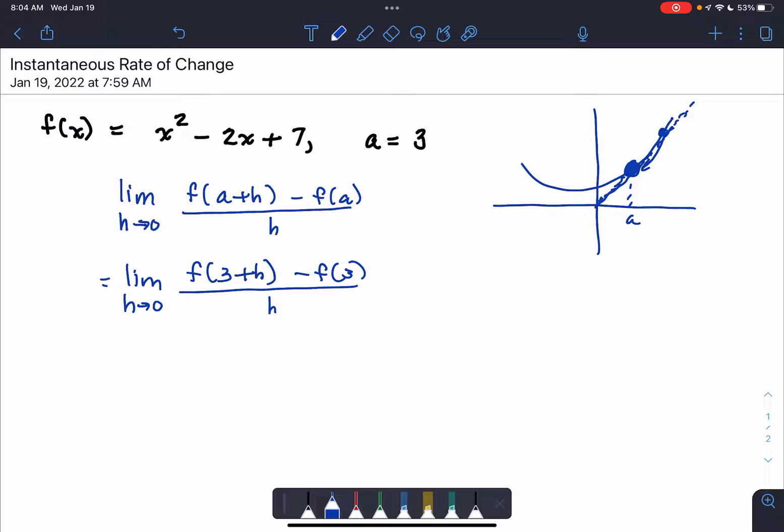We have to find f at 3 plus h, which means substitute 3 plus h into the function and simplify, then we have to find f of 3, then we subtract them. But before we do that let's just talk about notation.